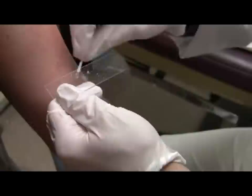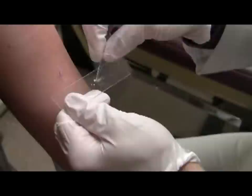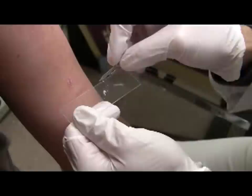If taking a scraping from a toe web, using a 15 blade may be easier. In this case, the macerated scale should stick to the blade such that you can smear the material onto the glass slide.